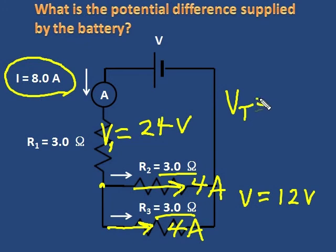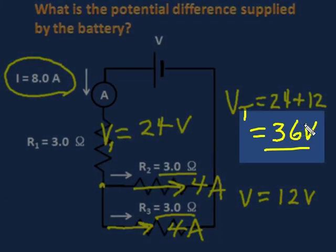Therefore, the total loss of voltage will be the 24 plus the 12. And that must be, then, the gain in the battery. 24 plus 12, 36 volts.